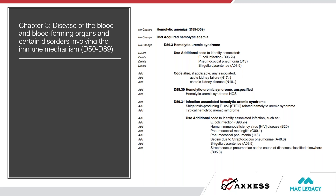Regarding Chapter 3 for hemolytic anemia, before we just had D59.3. Now it's been expanded: we have hemolytic uremic syndrome unspecified, and infection-associated hemolytic uremic syndrome D59.31, which we discussed in relation to HIV. It also gives instruction to identify any associated infection — E. coli is a common cause, as is pneumococcal pneumonia, among others.